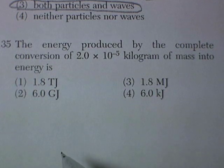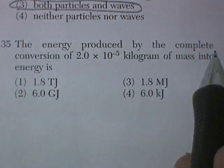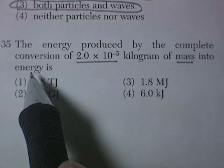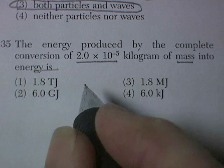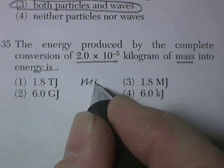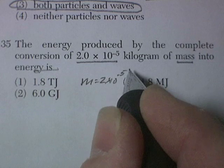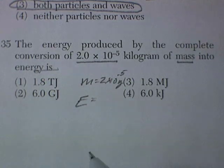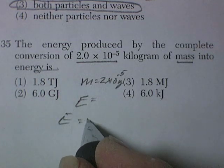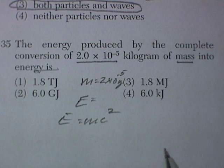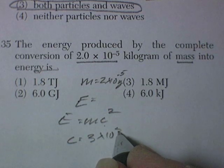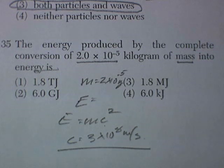Question 35. And the last one in part 1. The energy produced by the complete conversion of 2 times 10 to the negative 5 kilograms of mass into energy. So somehow mass, 2 times 10 to the negative 5 kilograms, converts into energy. And this is the famous E equals mc squared equation. And c, of course, is the speed of light. 3 times 10 to the 8 meters per second. So now it's calculator time to find the correct answer.